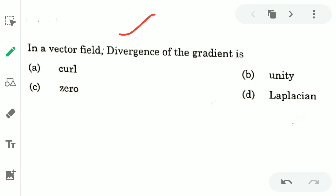The question was: in a vector field, divergence of the gradient is (a) curl, (b) unity, (c) zero, or (d) Laplacian. So first of all students, let us see divergence of the gradient.